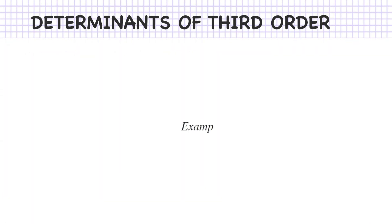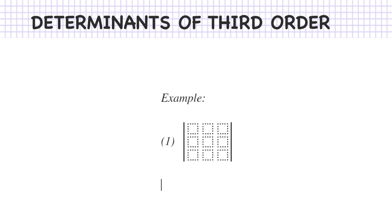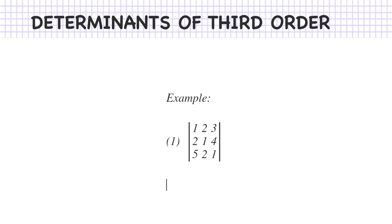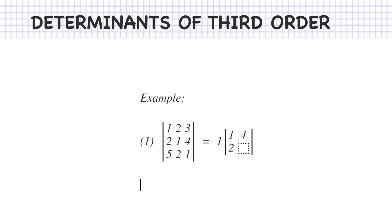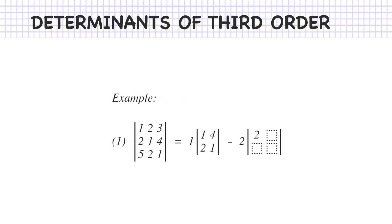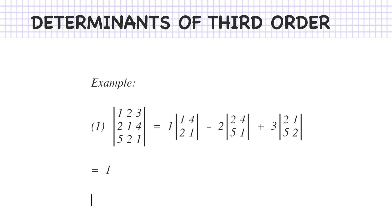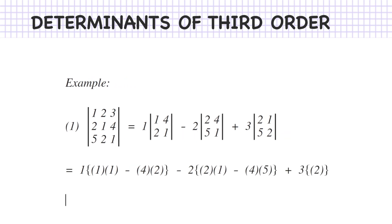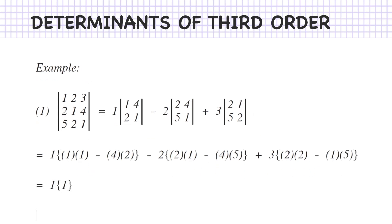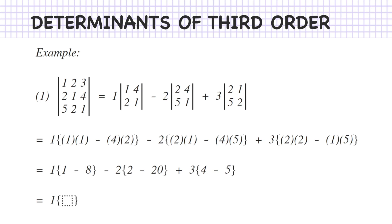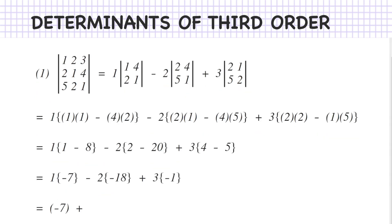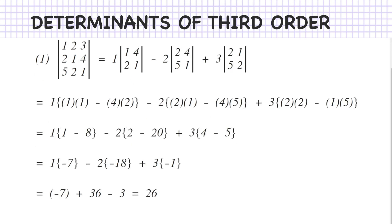Let's take an example of a third-order determinant: 1, 2, 3, 2, 1, 4, 5, 2, 1. Expanding: 1 times (1 into 1 minus 4 into 2), minus 2 times (2 into 1 minus 4 into 5), plus 3 times (2 into 2 minus 1 into 5). This gives 1 times (1 minus 8), minus 2 times (2 minus 20), plus 3 times (4 minus 5), which is 1 times minus 7, minus 2 times minus 18, plus 3 times minus 1. Opening brackets: minus 7 plus 36 minus 3, which equals 26.